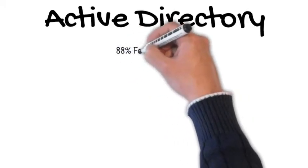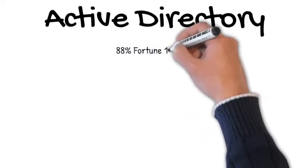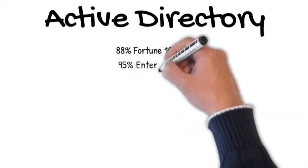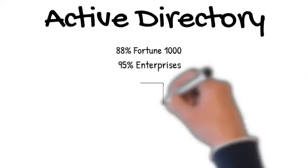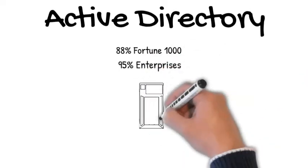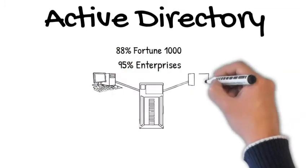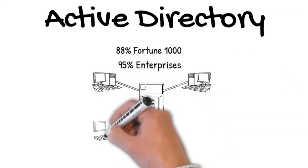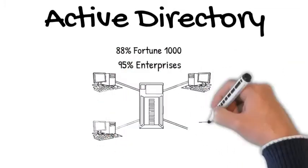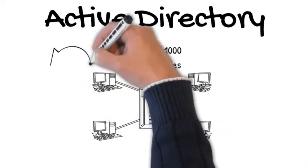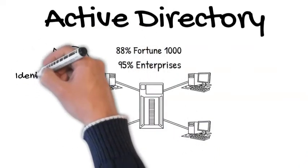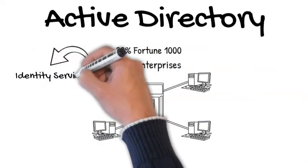Active Directory is a major management infrastructure that is used by 88% of Fortune 1000s and 95% of enterprises still today. It manages the infrastructure of servers, desktops, and laptops of the internal network computers, and it provides essential services that these machines rely on.